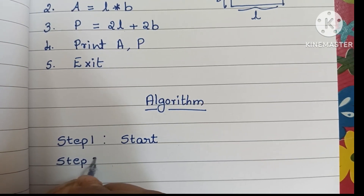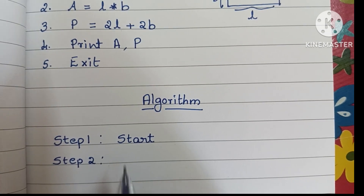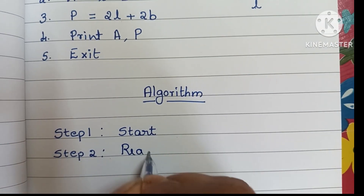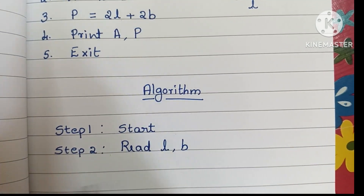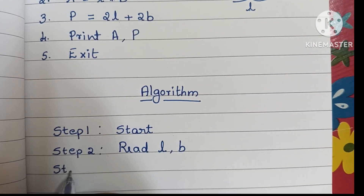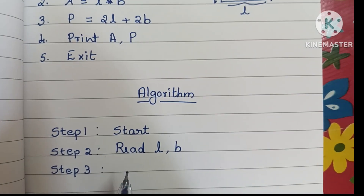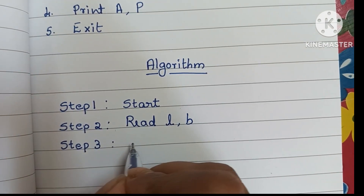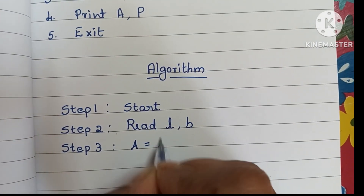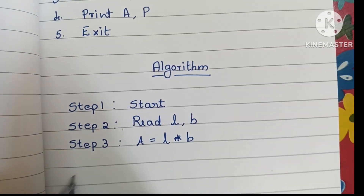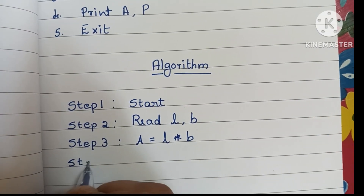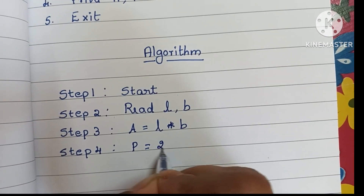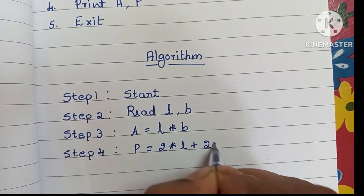In step 2, we have to input two values — read L and B. In step 3, we apply the formula to find area: A = L × B, that is length into breadth. In step 4, we find the perimeter of a rectangle: P = 2L + 2B.